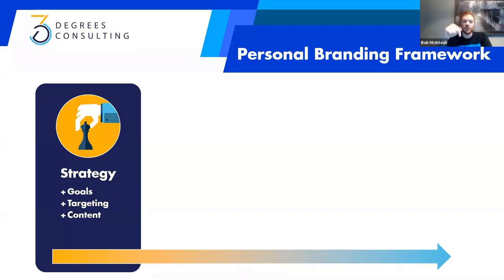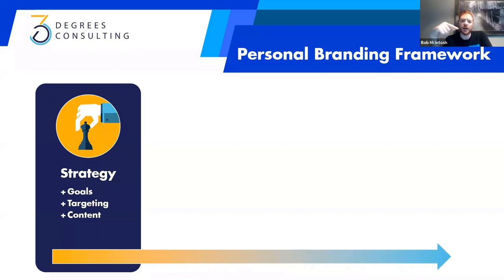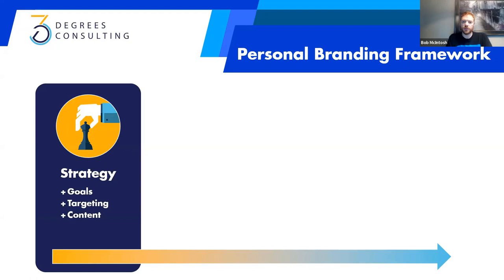As you can see, there's an arrow on this that goes from left to right. The reason that arrow goes from left to right is that you have to start with strategy, and we're going to move in that direction as we go through this.